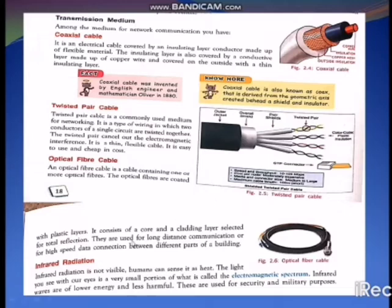Now we see infrared radiation. It is not visible to us; humans can sense it as heat. The light we see with our eyes is a very small portion of what is called the electromagnetic spectrum. The infrared waves are lower energy and less harmful, so these are used for security and military purposes.